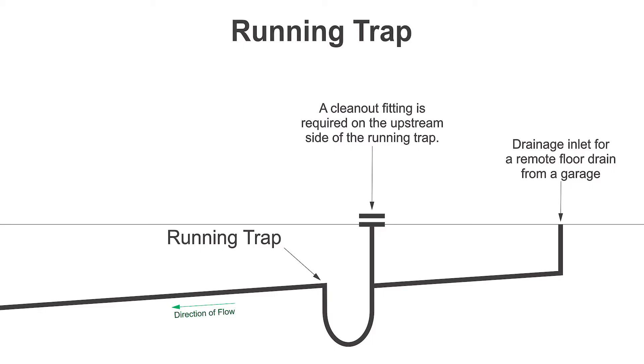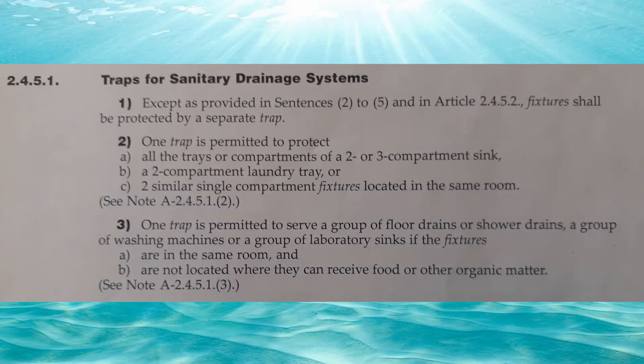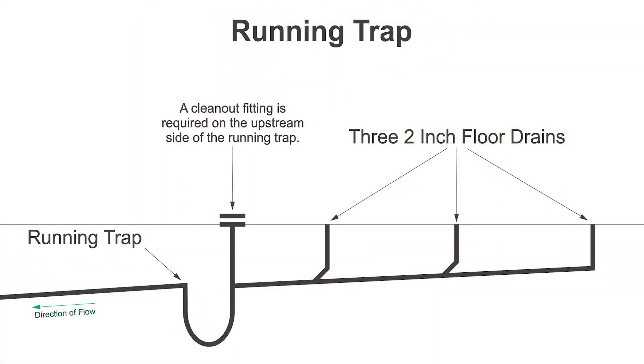There is one more code clause we should definitely be looking at: 2451 part 3. One trap is permitted to serve a group of floor drains or shower drains, a group of washing machines, or a group of laboratory sinks if the fixtures are in the same room and are not located where they can receive food or other organic matter. In this picture here we see a group of three two-inch floor drains that are all joined together and are served by one running trap. So that code clause would allow us to do that.